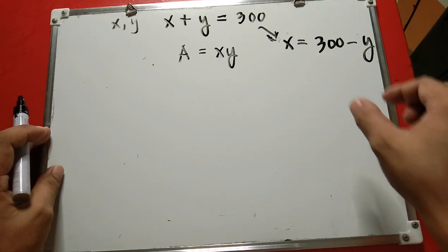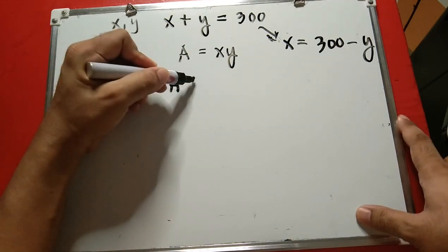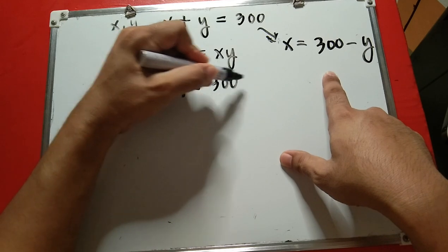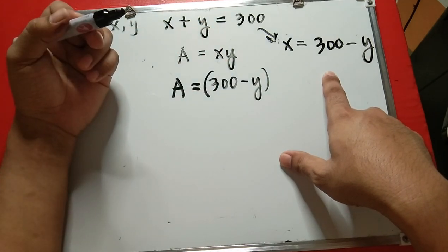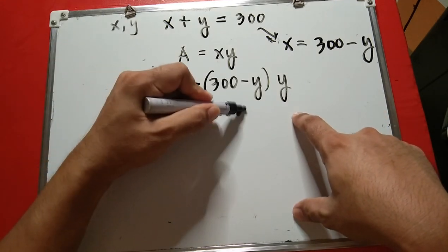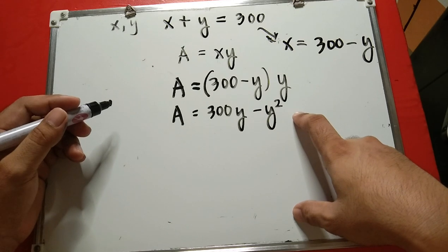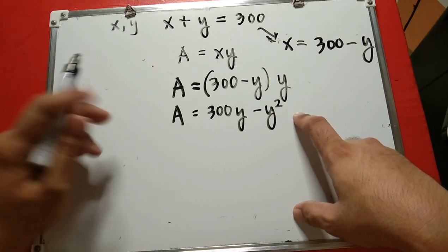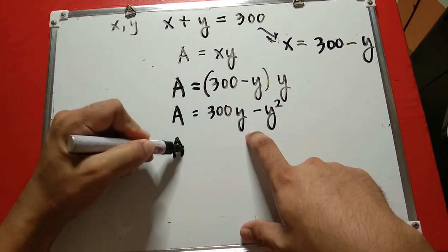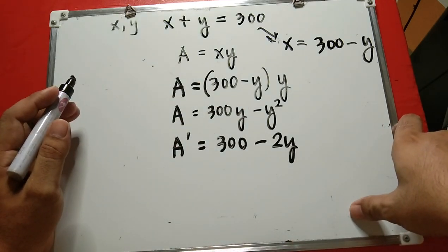Now we plug in the value of x into the second equation. So A equals (300 minus y) times y, which gives us A equals 300y minus y squared. The next step is to determine the critical points, so we take the derivative of A with respect to y: A prime equals 300 minus 2y.